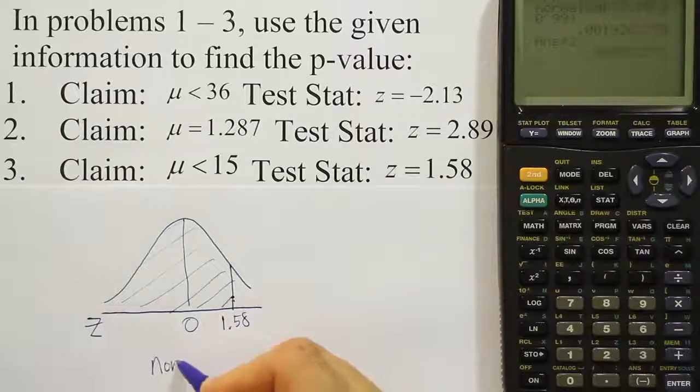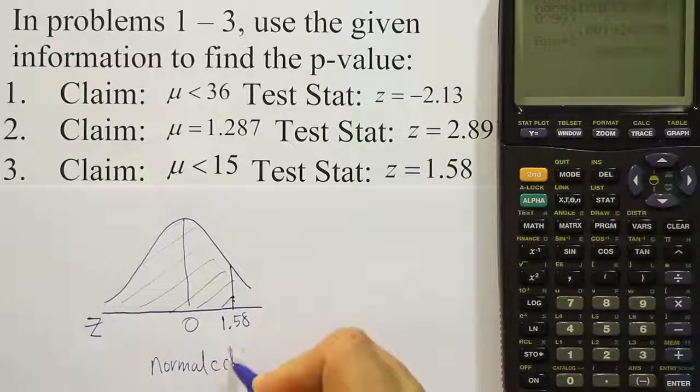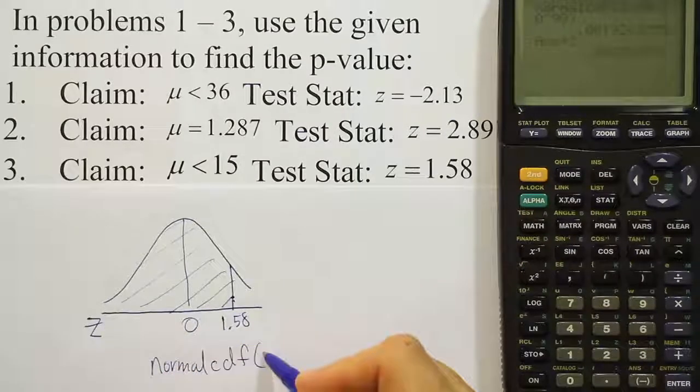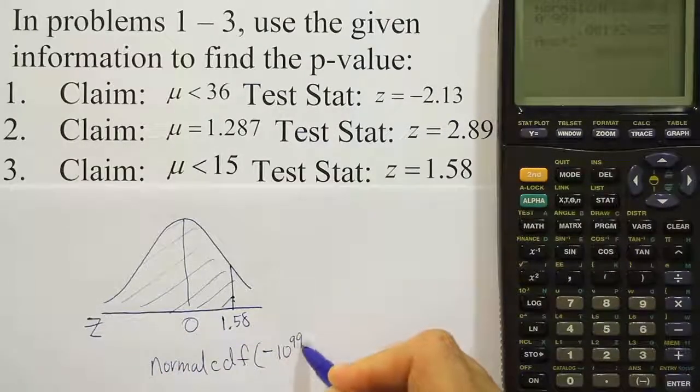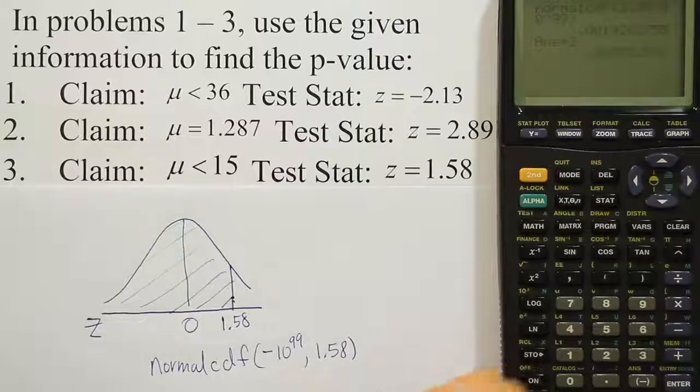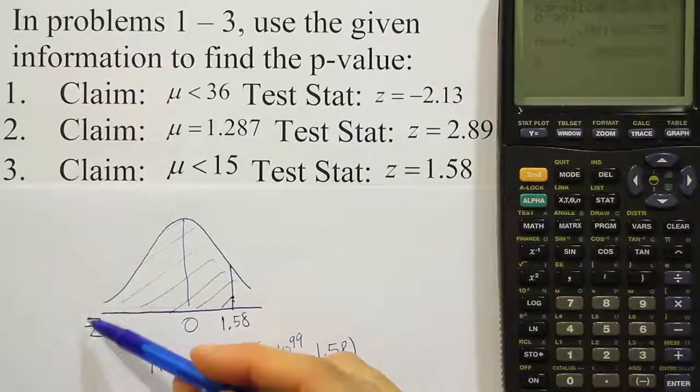So the calculator is going to want normal CDF. But we're going to give it from negative infinity, so negative 10 to the 99th power, up to 1.58.